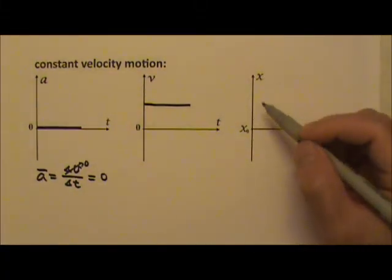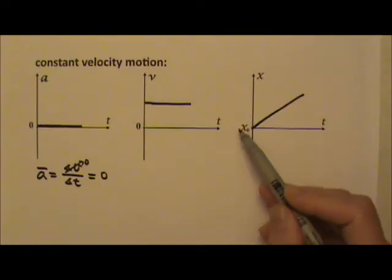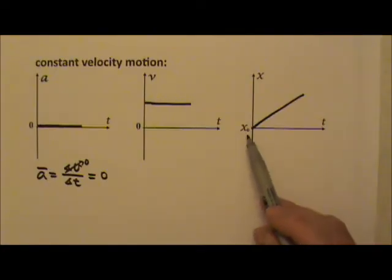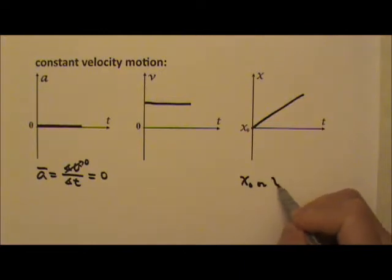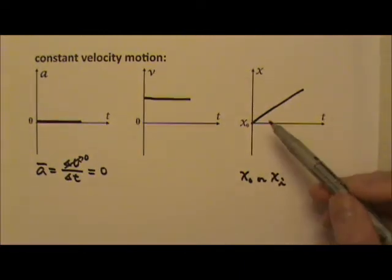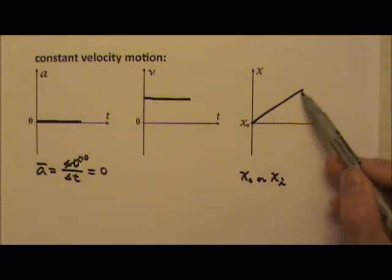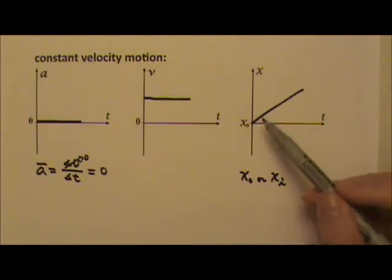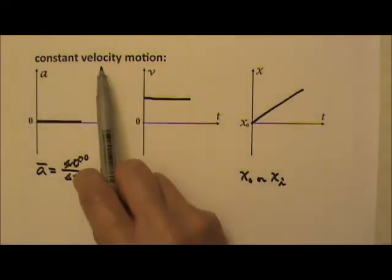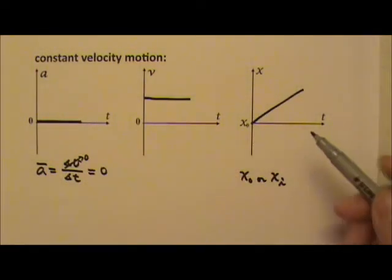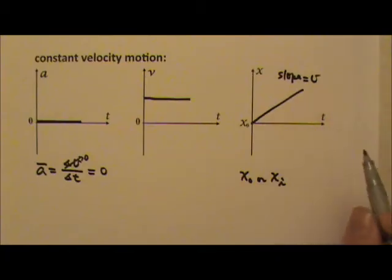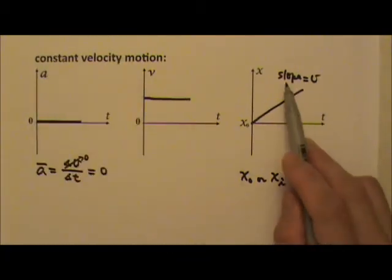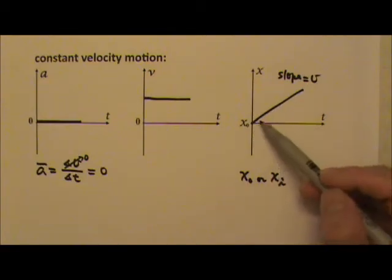The position versus time graph will be a straight line. x₀ represents the initial position — we usually use x₀ or xᵢ for the initial position. This graph tells you the position is changing at a constant rate, which is the same as constant velocity, because velocity is the rate at which position changes. The slope of the position versus time graph is the velocity. Constant velocity means constant slope; constant positive velocity means constant positive slope.